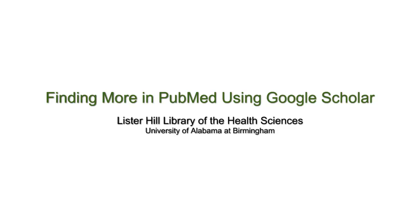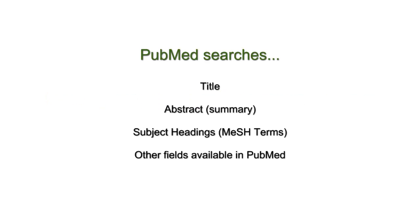Before we go into Google Scholar, let's quickly review how PubMed searches for articles. PubMed searches for your search terms within the title, abstract, and subject headings or MeSH terms of article records. Unless your search terms appear in one of these fields, you will miss articles that mention the terms only in their full text.